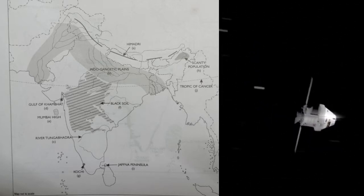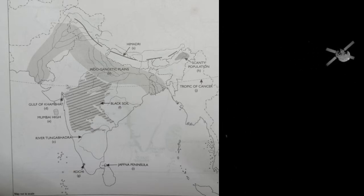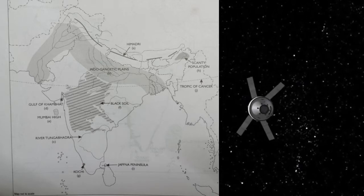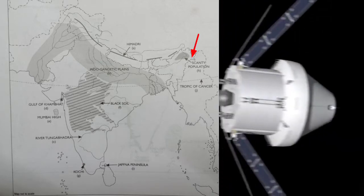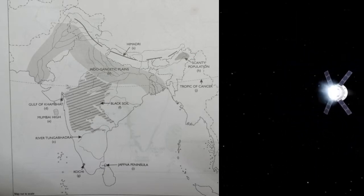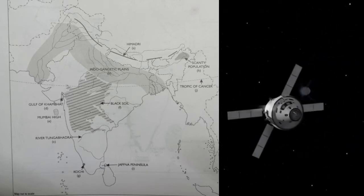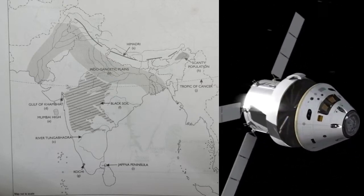Mark with a dot and name Kochi. Next, mark and shade one area of scanty population in Northeast India. Mark it with 'H' — this area shows scanty population.